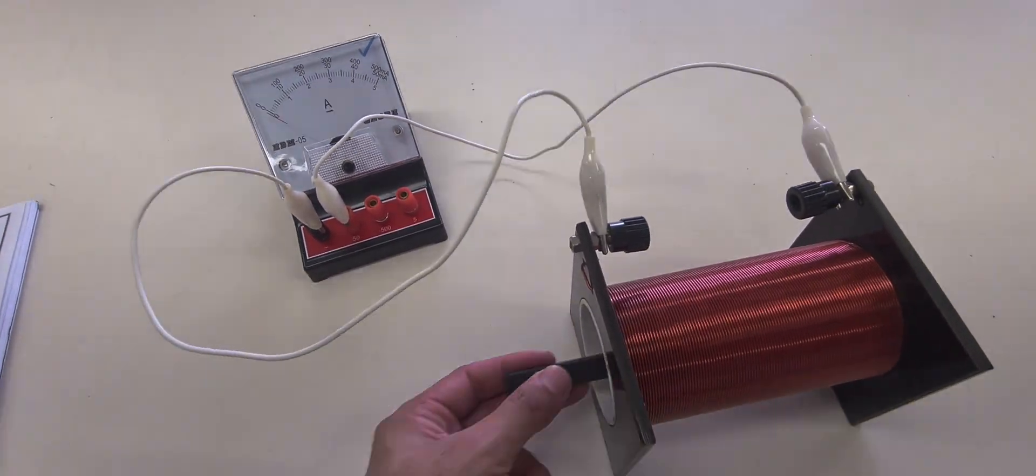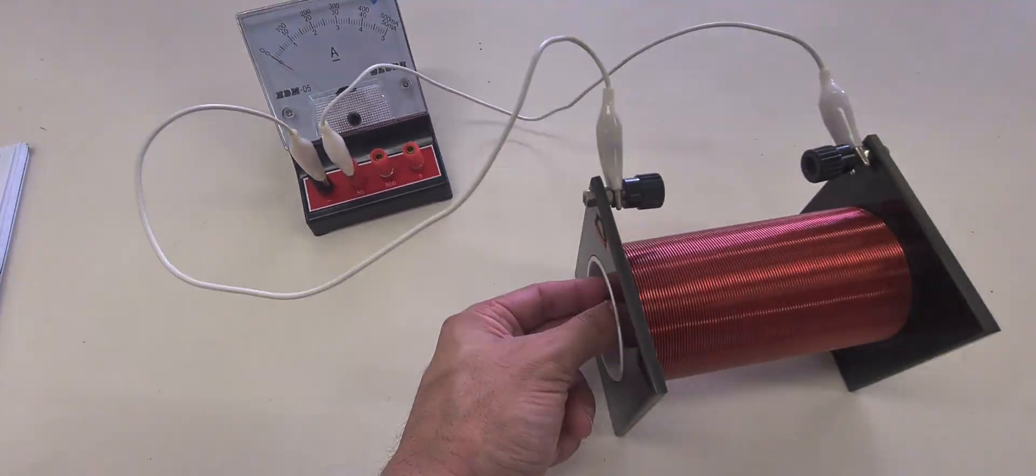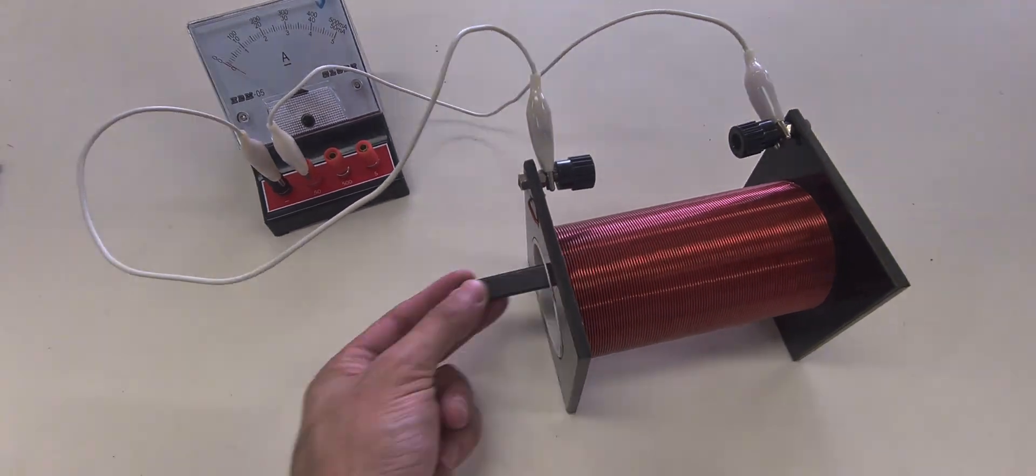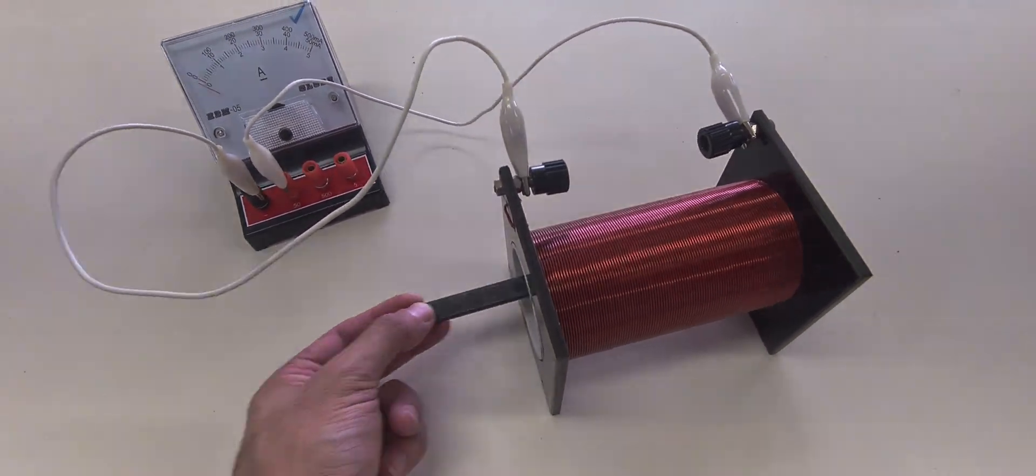Amazing how you get an electric current, electricity, just by simply moving a magnet in and out of a solenoid like this.